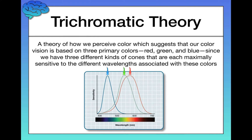This is what you're seeing on this visualization — three different types of cones: blue cones, green cones, and red cones. We call them that because that's what they're maximally sensitive to. They don't actually appear blue, green, and red in your retina — they're just all the same color, but that's what they respond to.